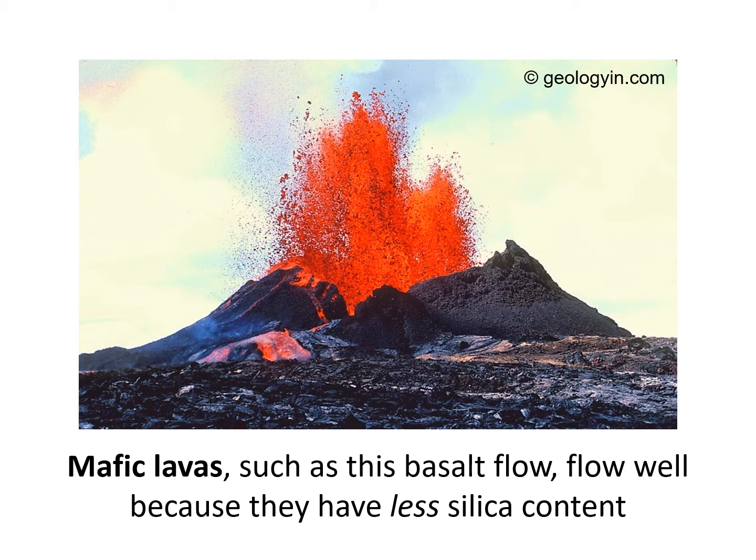When a shield volcano produces a mafic lava type eruption, the lava just flows across the landscape, developing into lava tubes, chambers, or fissures that extend for miles. We see this with the Hawaiian Islands specifically — those islands developed through a series of these volcanic eruptions over time. Mafic minerals tend to have more magnesium and iron in their chemical content, which influences how the eruption takes place and how readily the lavas flow.